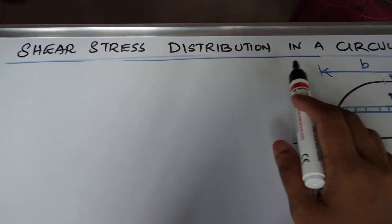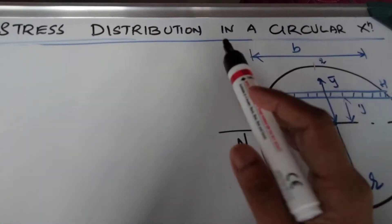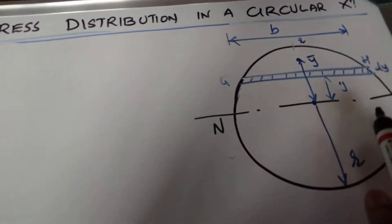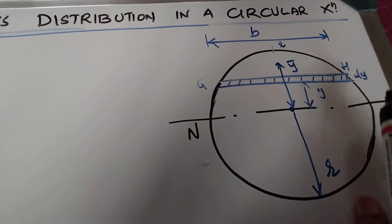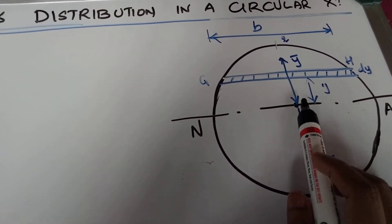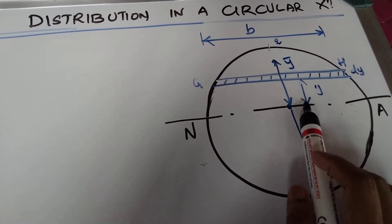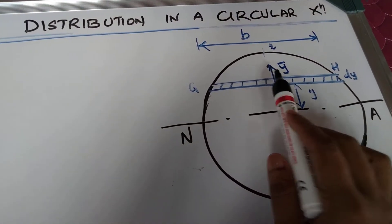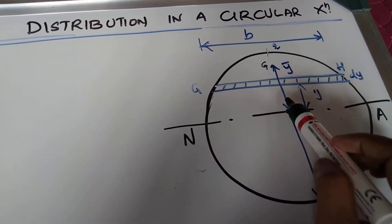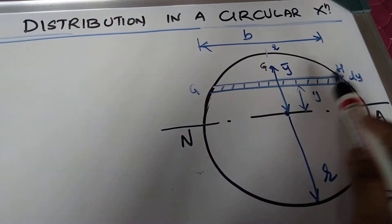Next we'll see the shear stress distribution in a circular cross section. We have already seen triangular and rectangular cross sections; now we'll see the circular cross section. For that, consider a circle with a layer GH at a distance of y from the neutral axis. y-bar is the centroidal distance, the radius is r, and b is the width of the element.